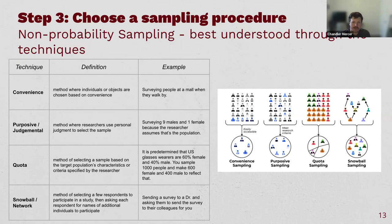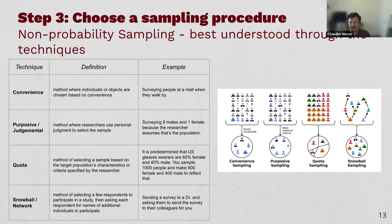Purposive — also called judgmental — sampling is where researchers use their own judgment to select the sample. For example, you stand in the mall and assume nine out of every ten visitors are male, so you wait to get nine males for every one female. That assumption isn't based on any statistical measurement — you're just guessing and making a judgment about the sample.